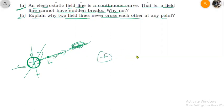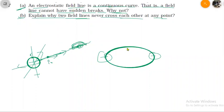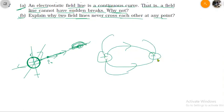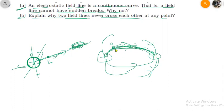It could be a positive charge and a negative charge — so this is a dipole. The field line is a curve going from positive to negative. This curve will have no break. Along this line, we will always feel a force, which means there will always be a continuous field line curve, with no sudden break.